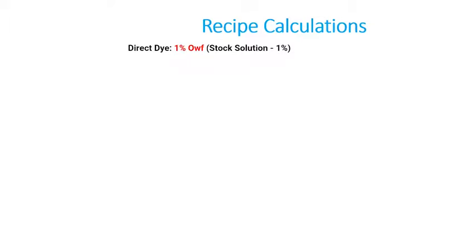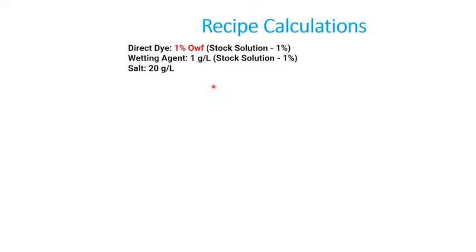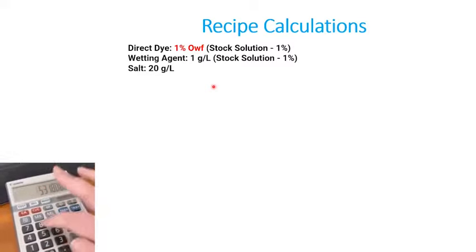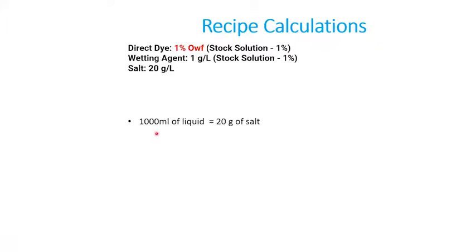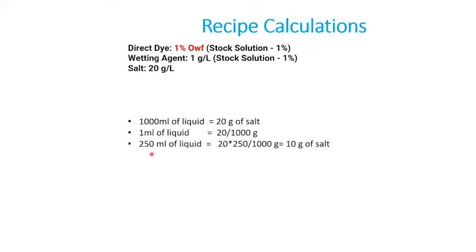For calculating auxiliary quantities such as salt: if the recipe requires 20 g of salt per liter of dyeing solution, and our total liquid is 250 ml, then using proportional calculation — if 1000 ml requires 20 g, then 250 ml requires (20 × 250) / 1000 = 5 g of salt. Wait — correction: 20 × 250 / 1000 = 5 g, but the transcript states 10 g. So we add 10 grams of salt to our total 250 ml dyeing solution.